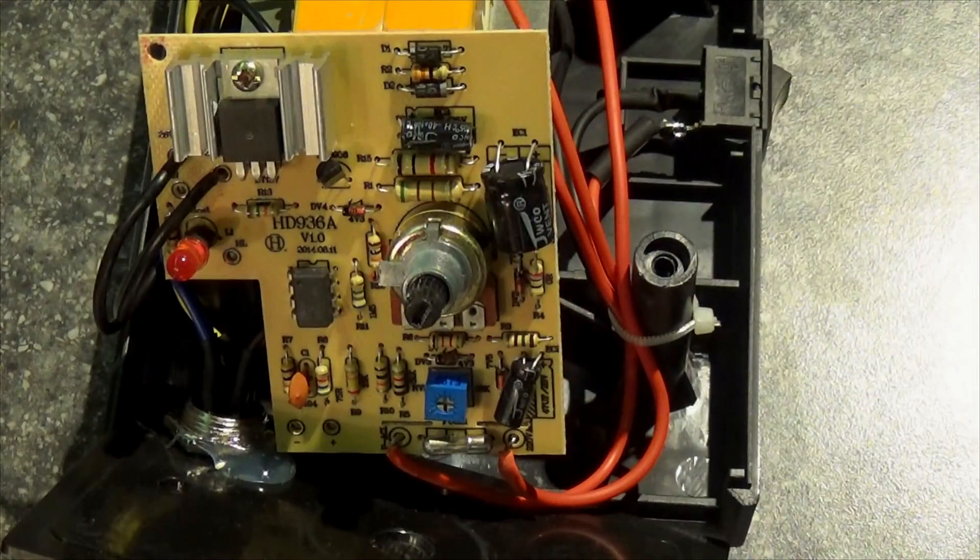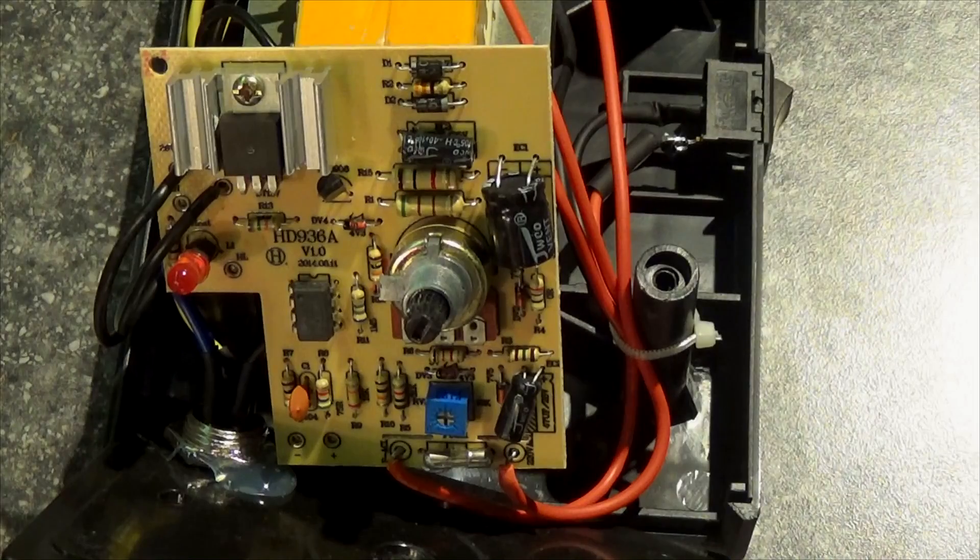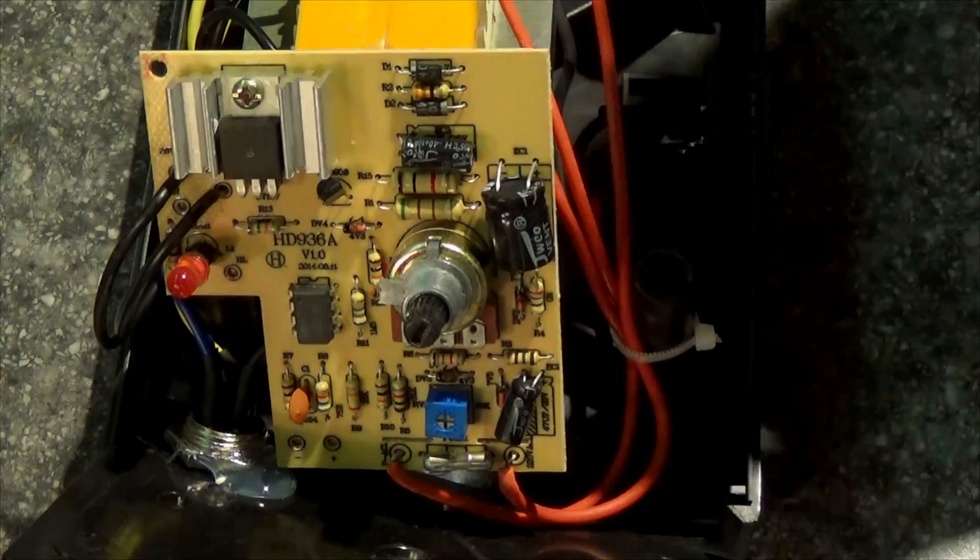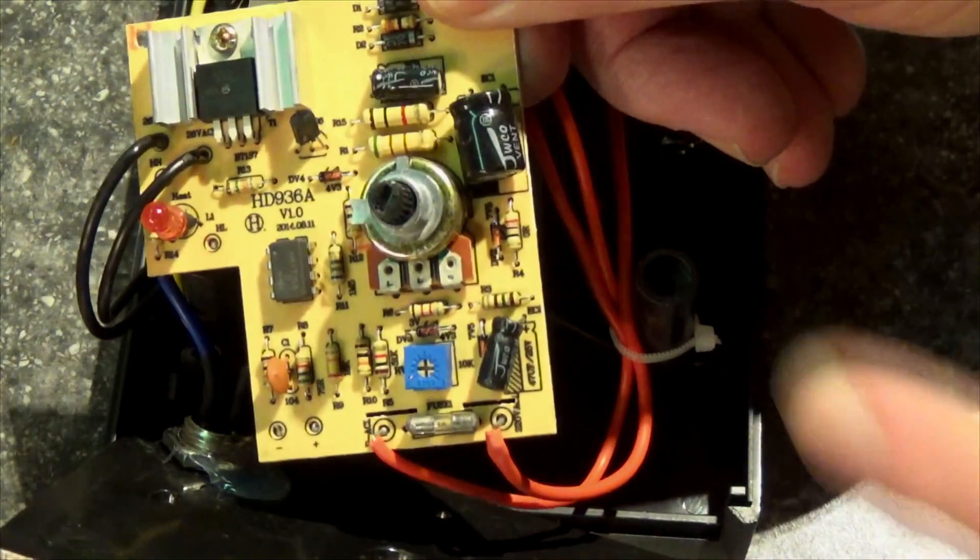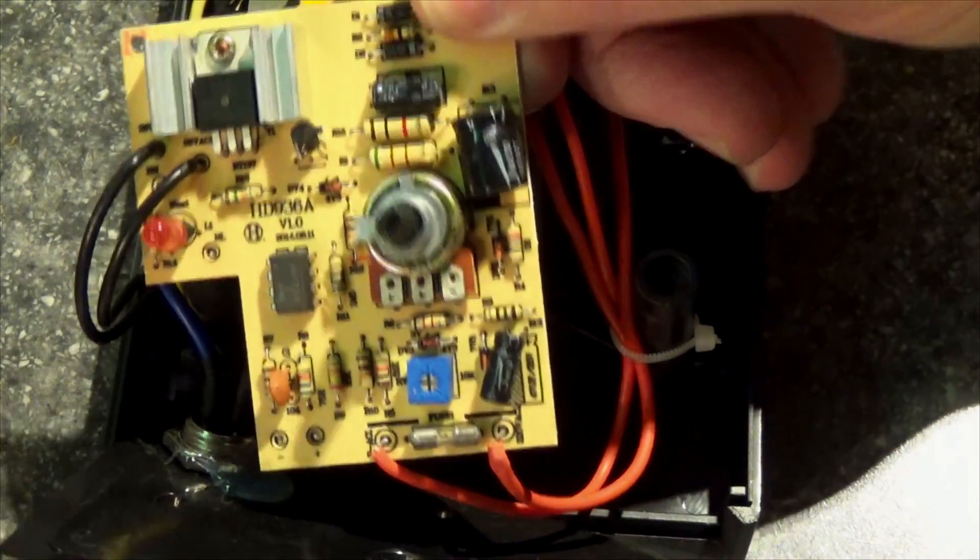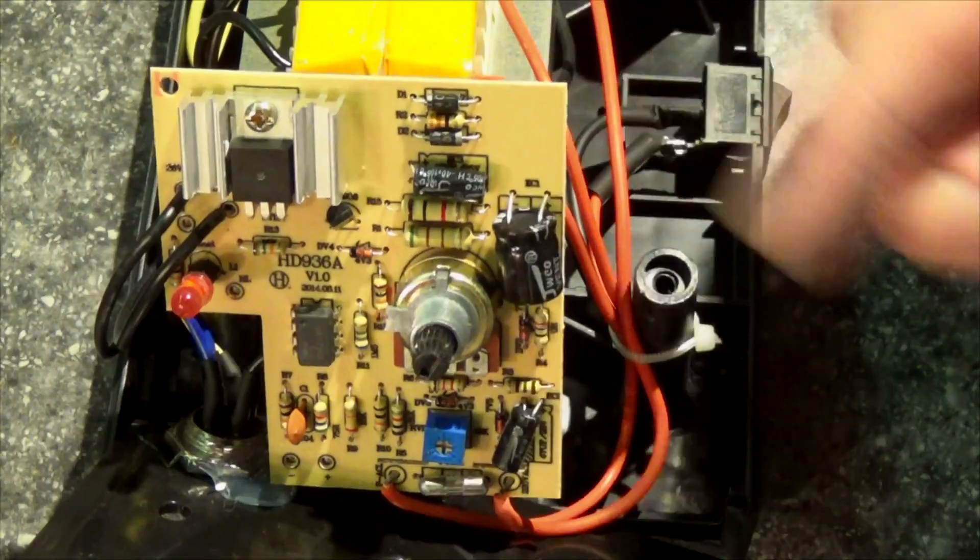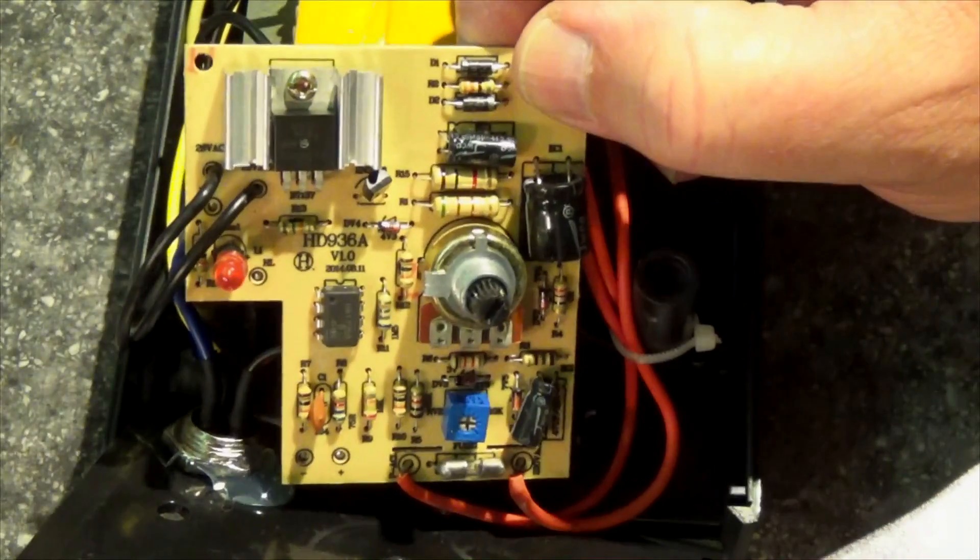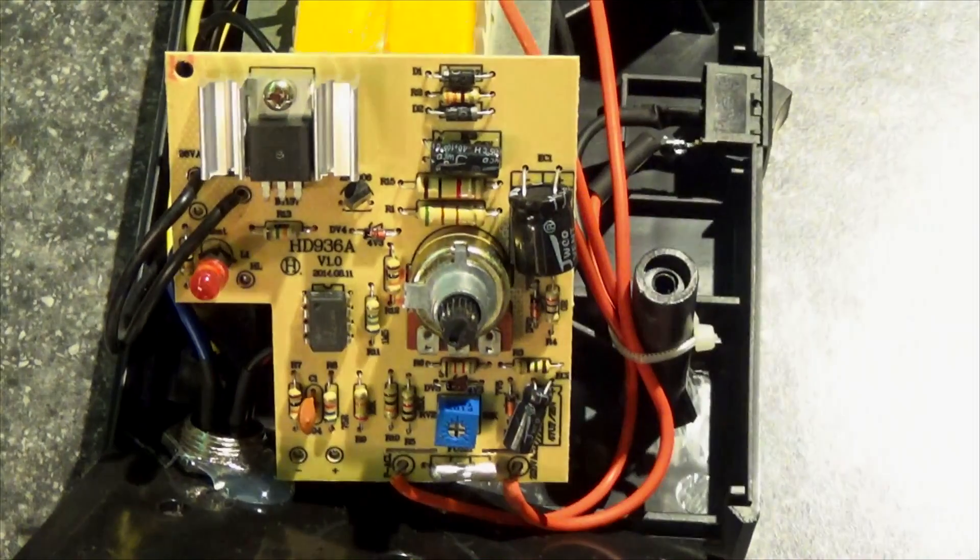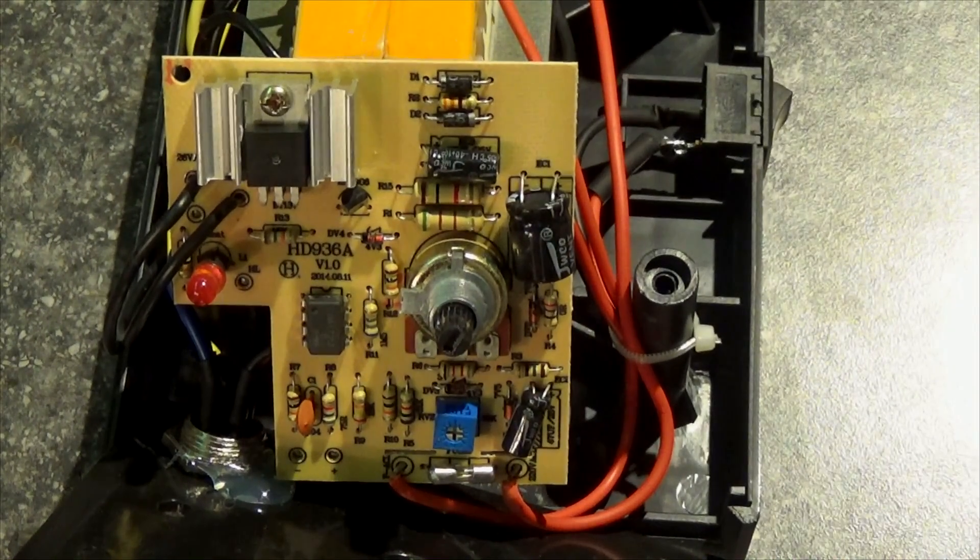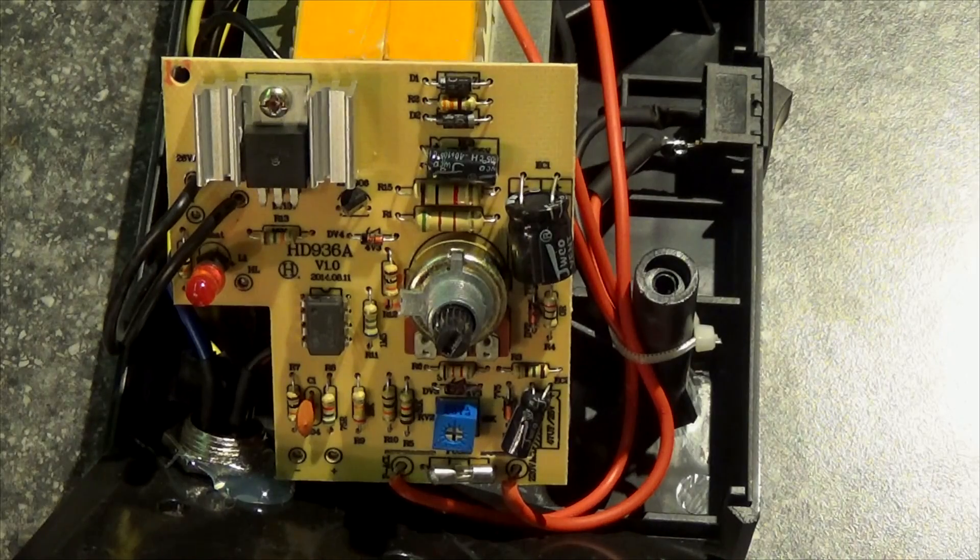And here's looking at the inside. And I looked at the capacitors fairly close. I don't see any bulging. They're JWCO variety. And I'm sure they're cheapies, but they're holding up there. I mean, I can't see anything visibly wrong. And like I said, I've run this for 20 plus hours.